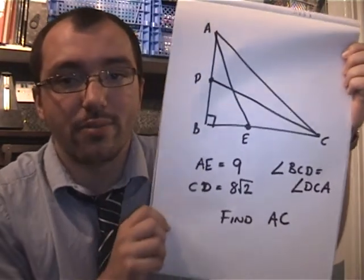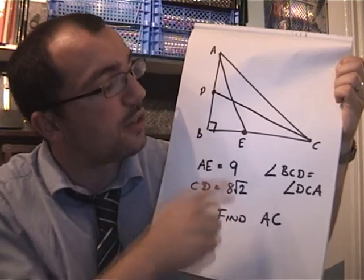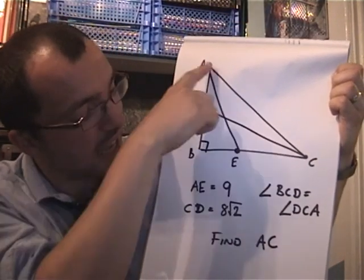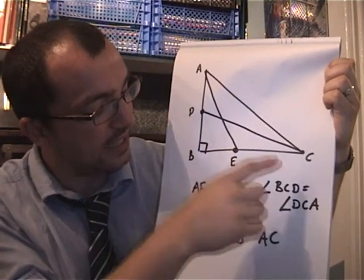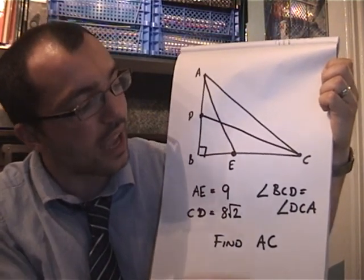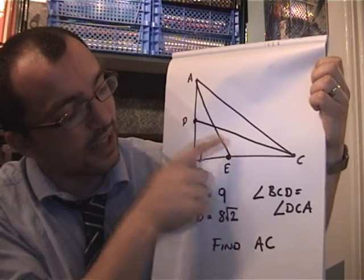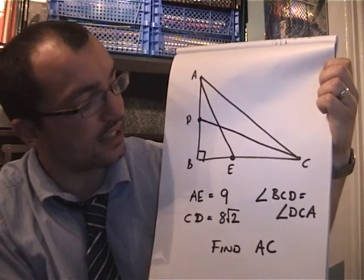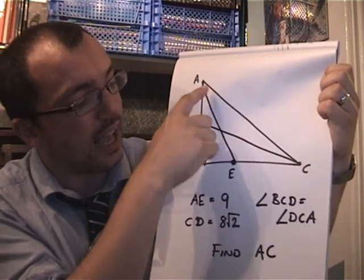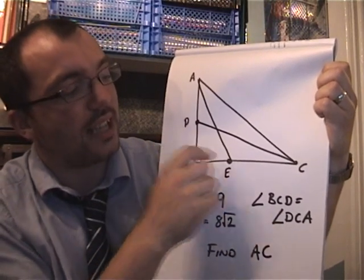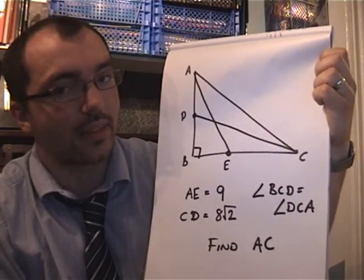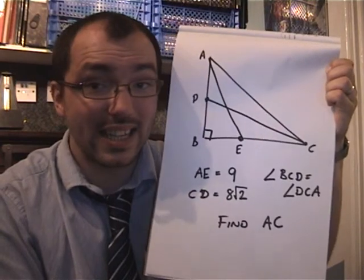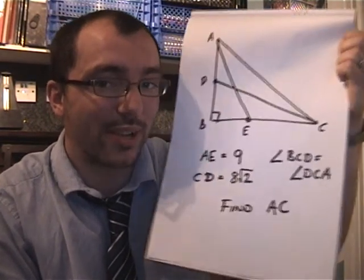We've got a right angle triangle, ABC. And there's two other points labelled on the triangle, E and D. All I'm going to tell you is that A to E is 9, C to D is 8√2. And that the point D on this line, when joined to C, forms a line that bisects the angle at C. So the angle D to C to A is the same size as the angle B to C to D. And your challenge is to see if you can find the length of the line AC. Difficult problem this time, so good luck.